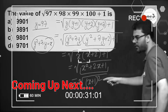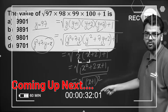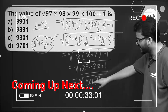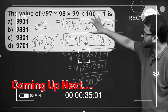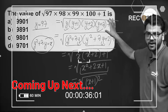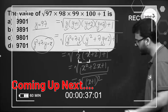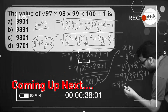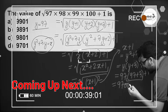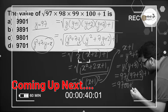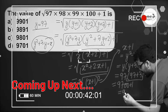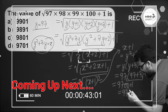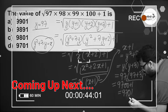The square root of (x+1)² is simply x+1, since the numbers are positive. Substituting back gives us 9700 + 1, so the answer is 9701.